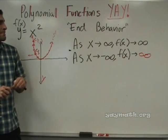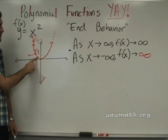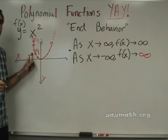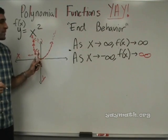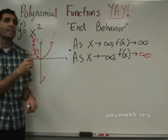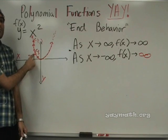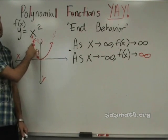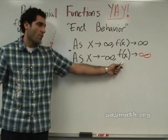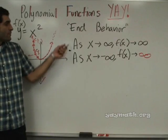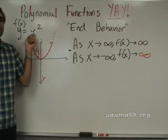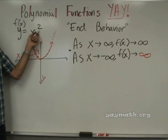As x is getting smaller, y is getting bigger. As x gets smaller, f of x or y is getting bigger. As x gets bigger, so does y. So we just described the end behavior of a parabola, which is an even function — even meaning the degree is 2. If you have x squared, or x to the 4th, or x to the 6th, those are called even functions.